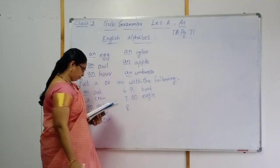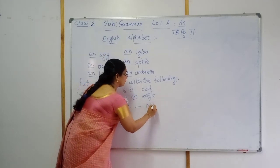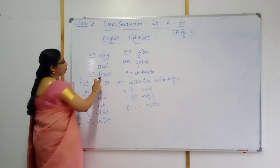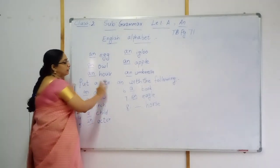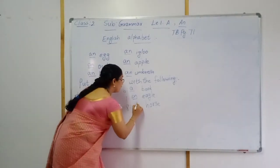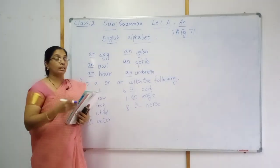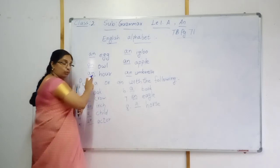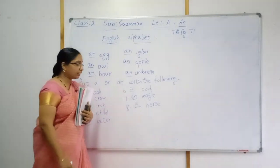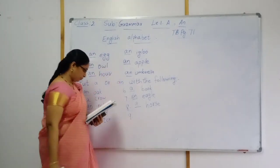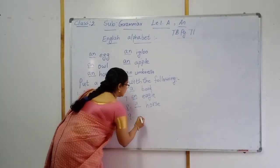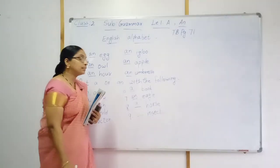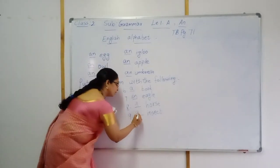Number eight — horse. First letter H. Here you see — you may have the question: earlier for 'hour' we wrote AN, but here we are writing A. Why? Horse — we are pronouncing it with a 'ha' sound. But 'hour' — there is no 'ha' sound, only 'our.' That's why 'horse' becomes a consonant sound and 'hour' becomes a vowel sound. Number nine — insect. First letter I, that is a vowel sound, so AN insect.